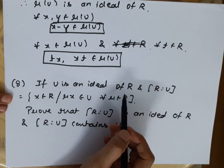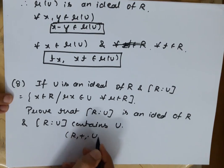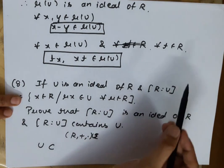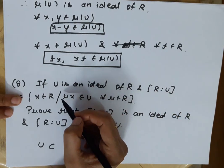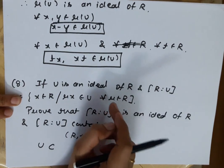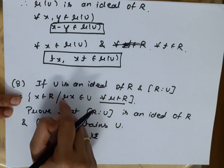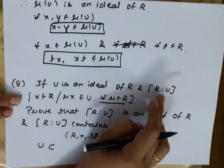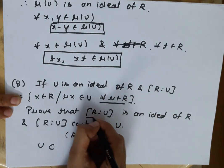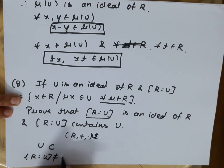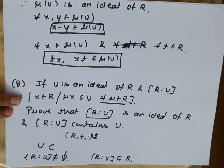Let me explain this a little. We have (R, +, ·) which is a ring and U which is an ideal. R:U is the collection of those elements x belonging to R such that r·x ∈ U for all r ∈ R. We have to prove that this collection is an ideal of R. First we prove it is non-empty; R:U will contain elements since R elements satisfy this property, so it is a non-empty subset of R.